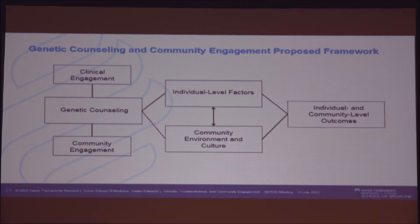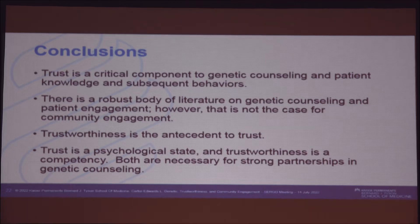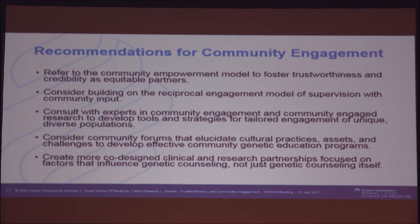Understanding community environmental cultures helps us identify not only individual-level outcomes but also community-level outcomes. In conclusions: trust is a critical component. There's a robust body of literature on genetic counseling and patient engagement, but not on community engagement. The antecedent to trust is trustworthiness — trust is a psychological state, but trustworthiness is a competency we must develop. My recommendations include referring to the community empowerment model, which was published around 1988, while the other papers I showed were published in 2021 — meaning no one built a body of science in those 30 years. We can start doing that.